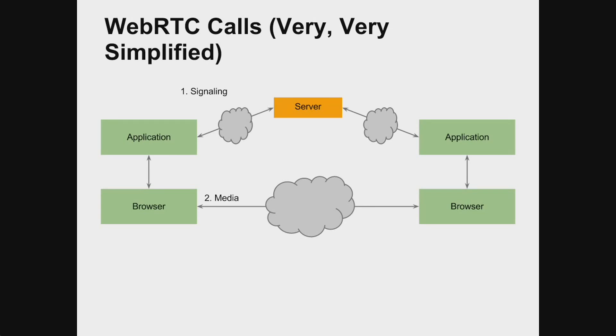This diagram here is a very simplified description. We can imagine we have two browsers on two different machines somewhere. It is up to the Web page to implement the application part and implement a signaling solution. The point of the signaling solution is to first figure out who you'd like to call with WebRTC, which can be implemented like a contact list or whatever. The signaling solution also exchanges the information needed to set up the call, for instance what codecs are supported. We're going to gloss over that part and instead focus on number two — media — when media starts flowing.